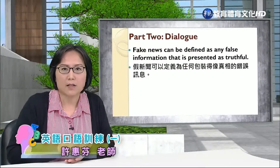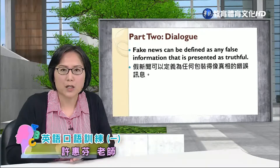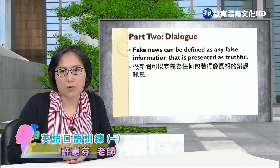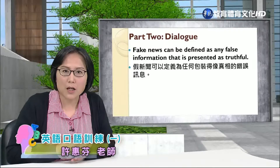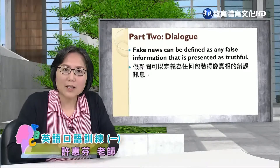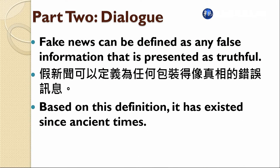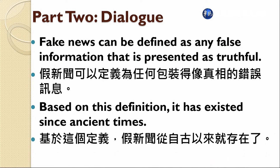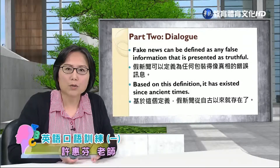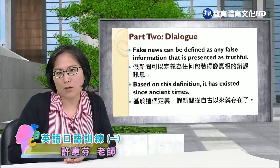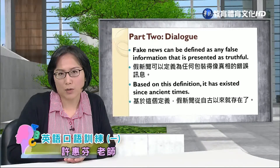那我们英文就是be defined，这个就是下定义，介系词就是as. 它可以被定义为什么呢？主要就是false information，简单来讲就是它是错误的讯息，但是这个讯息that is presented，又被呈现得好像你看起来是真的那个样子. Based on this definition, it has existed since ancient times. 其实基于这个定义来讲，假新闻一点都不新，从自古以来就有了.